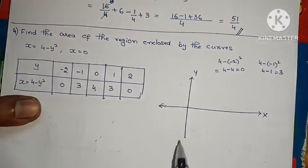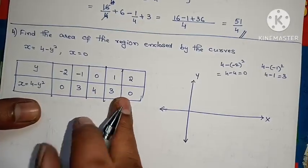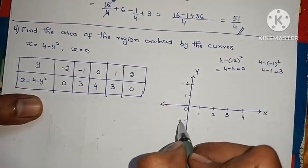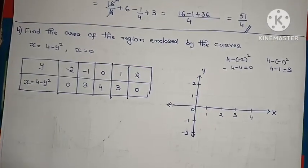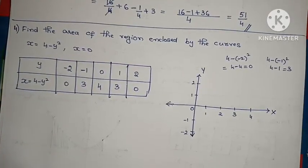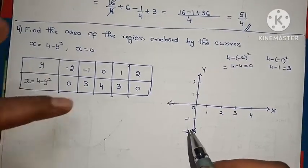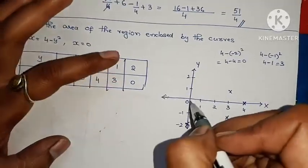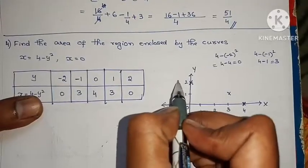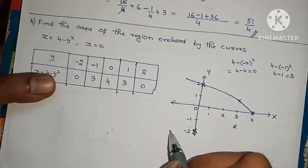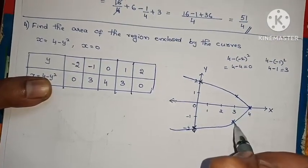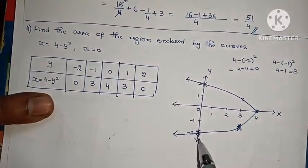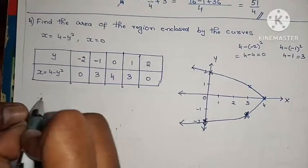Mark x-axis and y-axis. x-axis values: 0, 3, 4, 3, 0. y-axis values: −2, −1, 0, 1, 2. Plot points: (0, −2), (3, −1), (4, 0), (3, 1), (0, 2) and join them. The parabola is drawn. Since x = 0 is the y-axis, the region is bounded from y = −2 to y = 2.